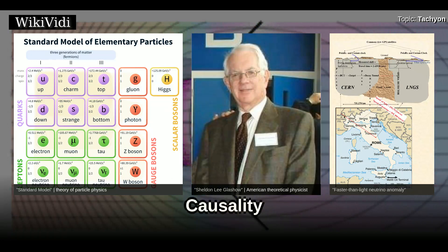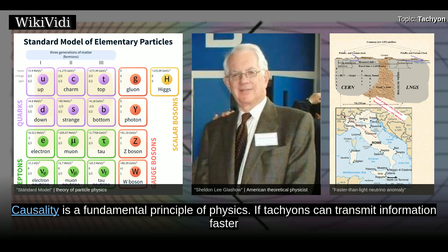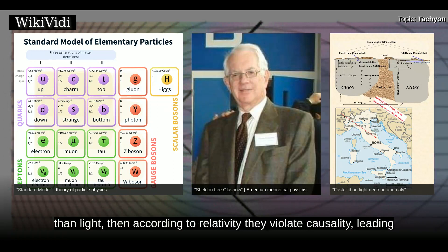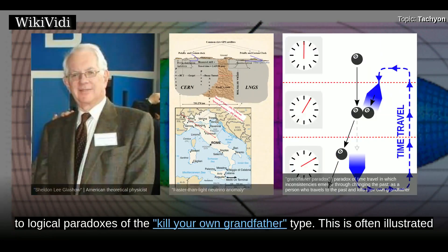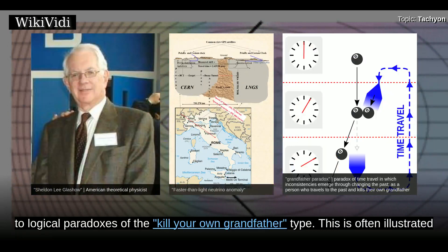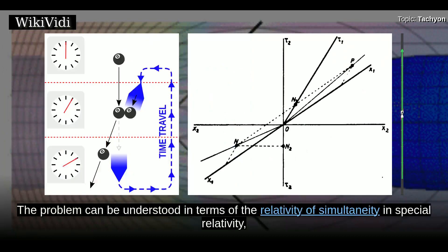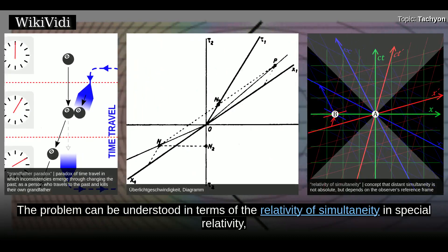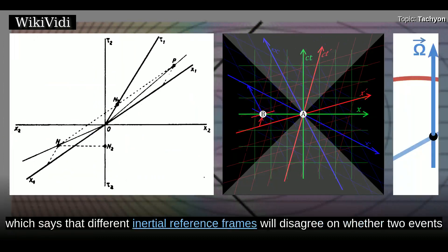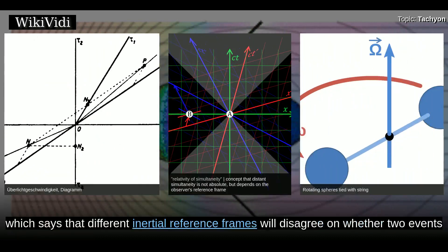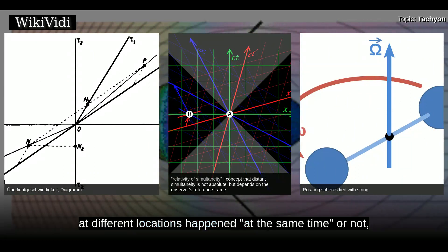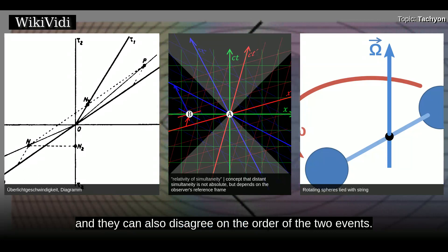Causality. Causality is a fundamental principle of physics. If tachyons can transmit information faster than light, then according to relativity they violate causality, leading to logical paradoxes of the kill-your-own-grandfather type. This is often illustrated with thought experiments such as the tachyon telephone paradox or logically pernicious self-inhibitor. The problem can be understood in terms of the relativity of simultaneity in special relativity, which says that different inertial reference frames will disagree on whether two events at different locations happened at the same time or not, and they can also disagree on the order of the two events.